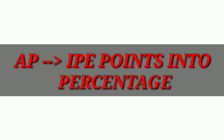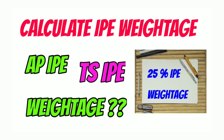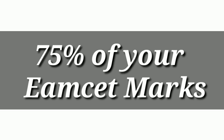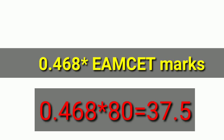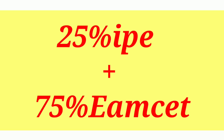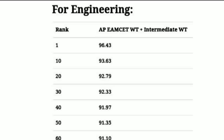In the case of AP students, you have to convert your IP points into percentage. I have already made a video on how to calculate IP weightage, so go and watch it on my channel. Then you have to calculate 75% of your MSET marks — just multiply 0.468 with your MSET marks. Suppose you have secured 80, then multiply by 80, you would get 37.5. Then add both — the IP 25% weightage and 75% MSET weightage — which will give you a total MSET weightage.